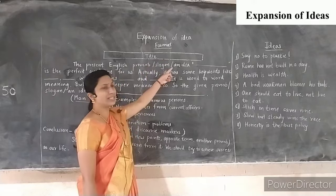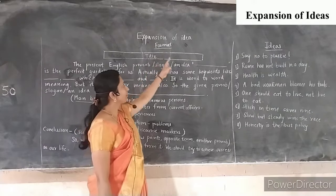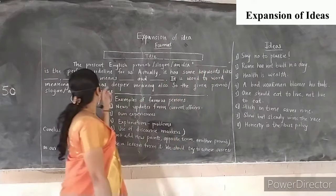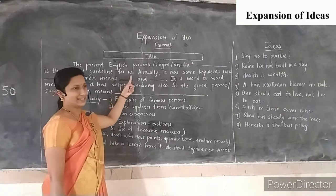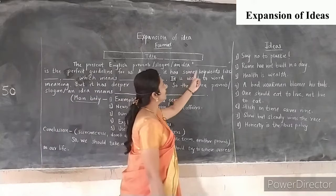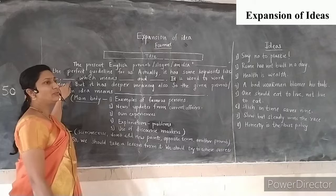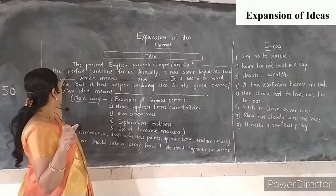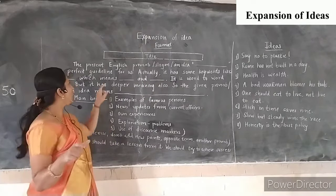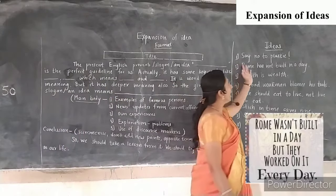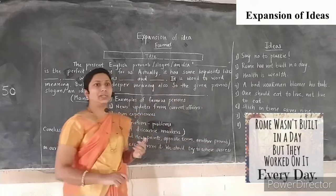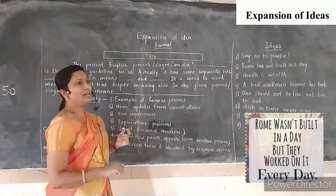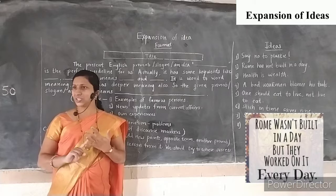You have to find out keywords from that quote, which means you write the exact word-to-word meaning of it. For example, take 'Rome was not built in a day.' They are talking about Rome — so Rome is a keyword. 'Built' is there, 'a day' is there. So these three keywords are there. Note them down — there may be two or three keywords. Then explain their meaning: Rome is the famous city which was a great empire. 'Built in a day' means a sudden act.